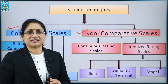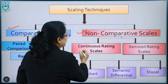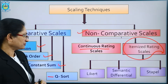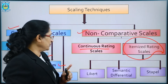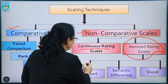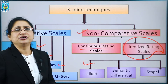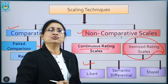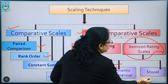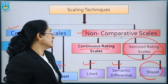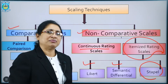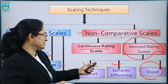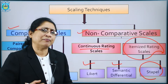Under non-comparative scales, we have two divisions: the continuous rating scale and the itemized rating scale, which is very commonly used. The itemized rating scale has three different types: the Likert scale, which is very commonly used in most questionnaires; the semantic differential scale, a very good technique used by market researchers; and the staple scale, also used by market researchers.